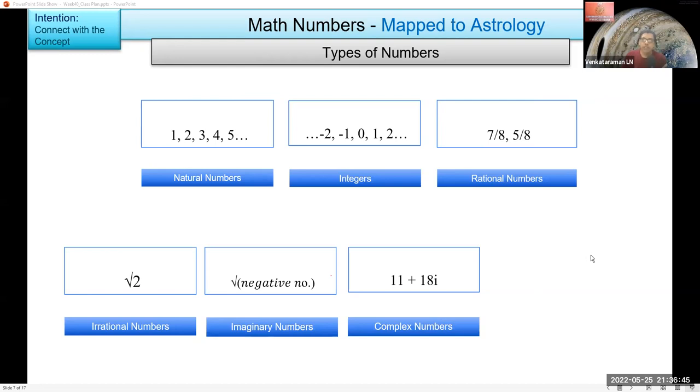Seventh is transcendental numbers. These are like non-algebraic numbers. Now coming to what they mean or what meaning I have given.